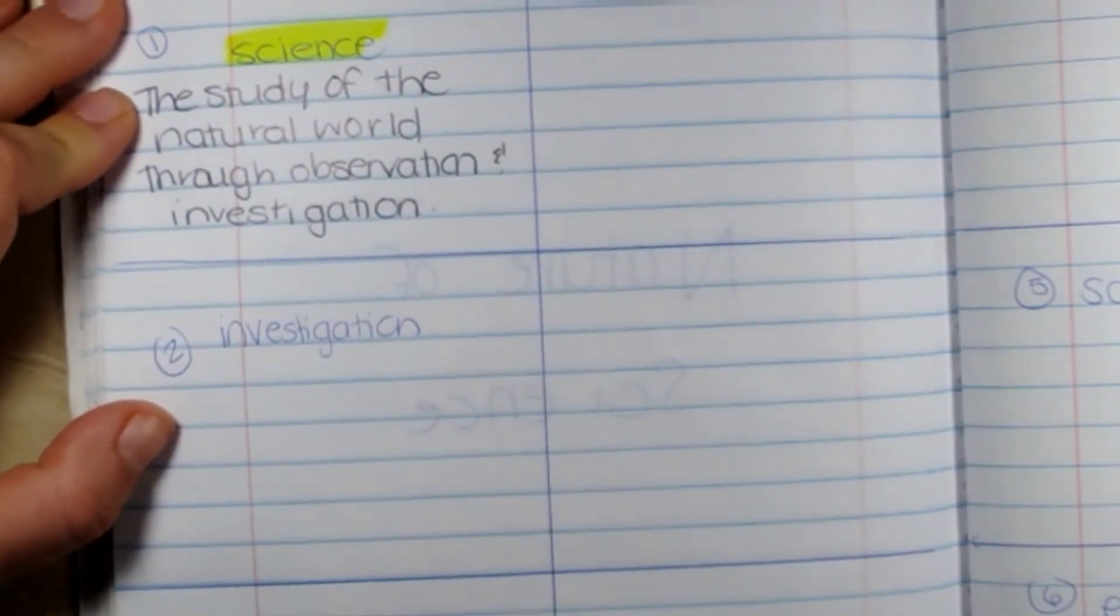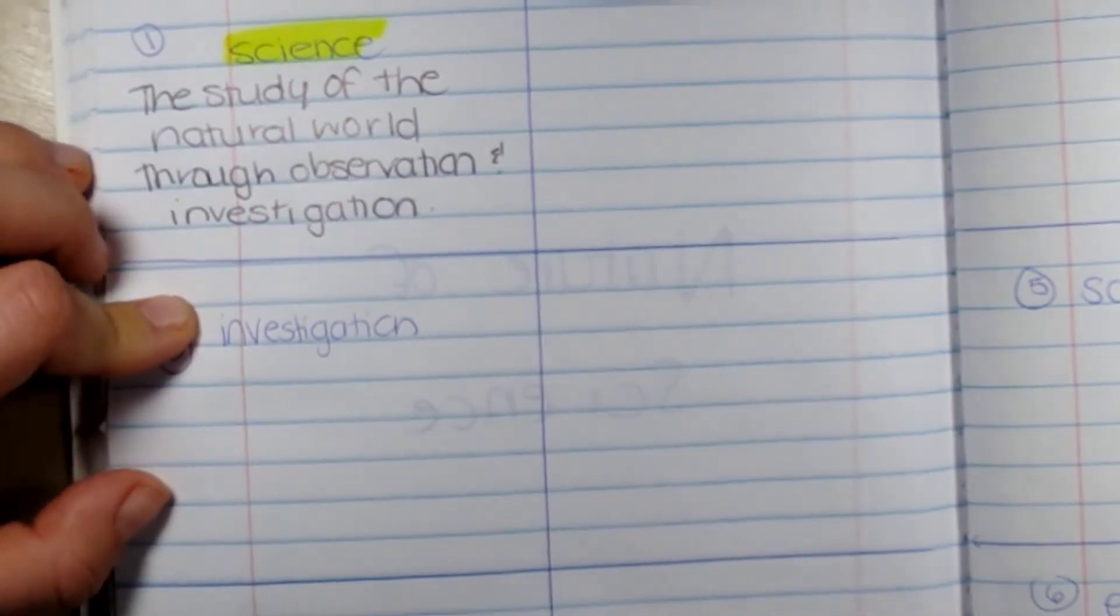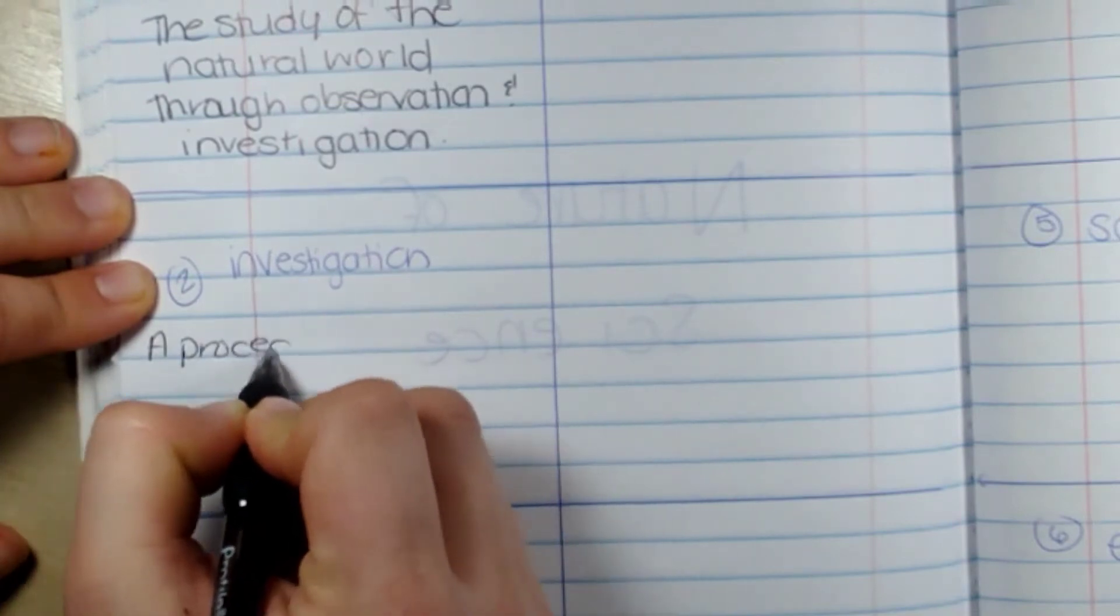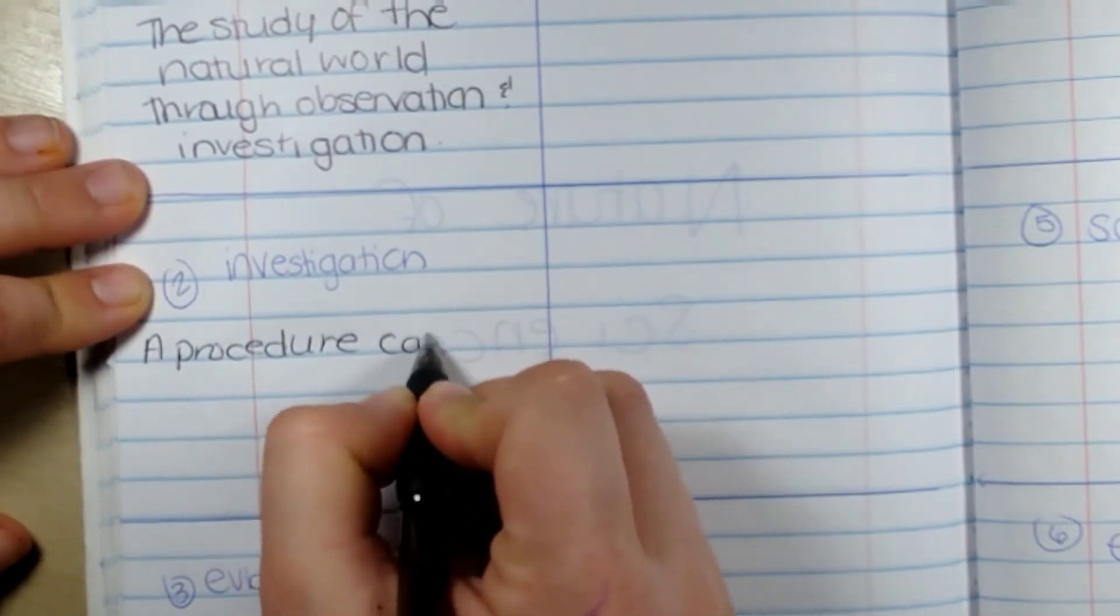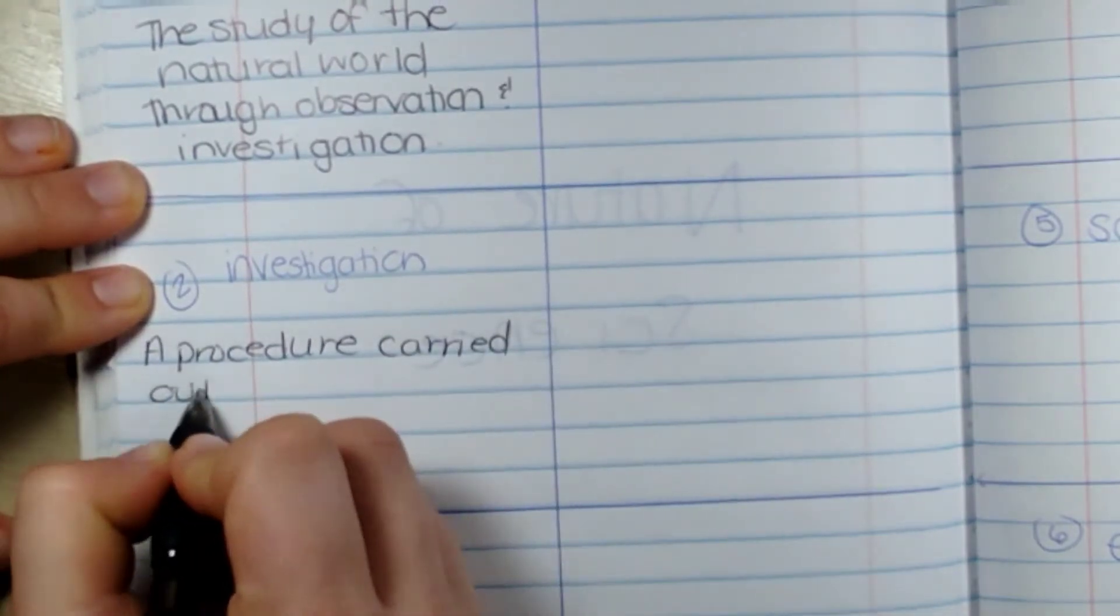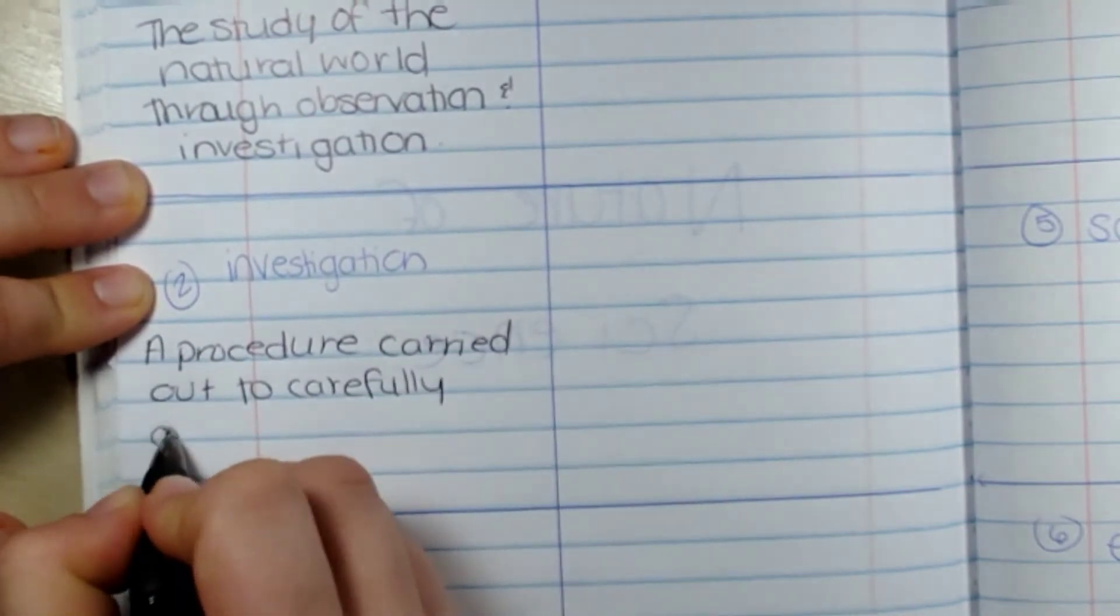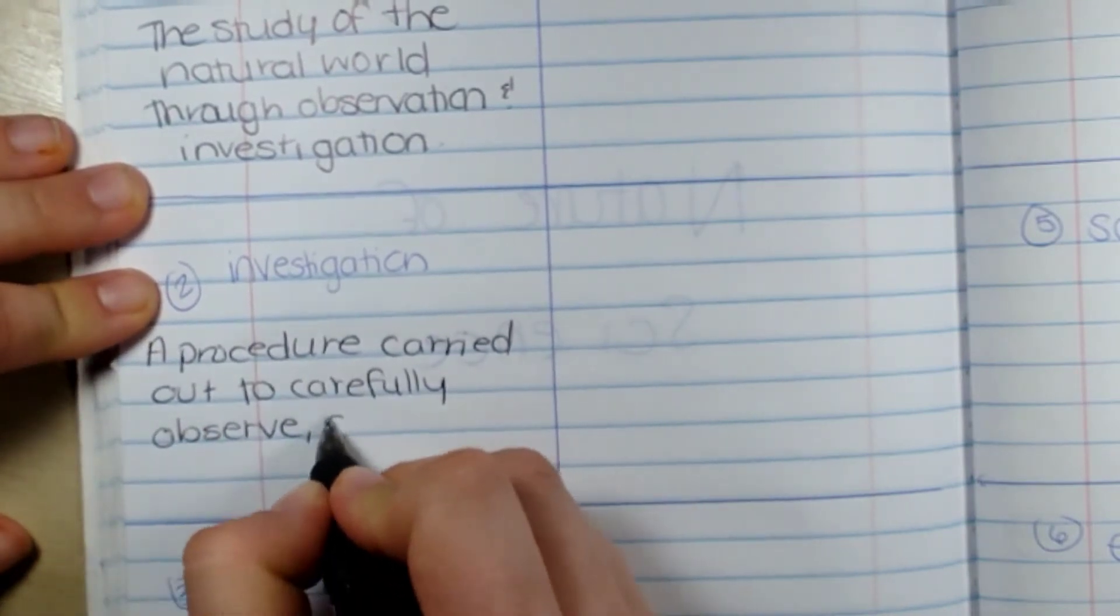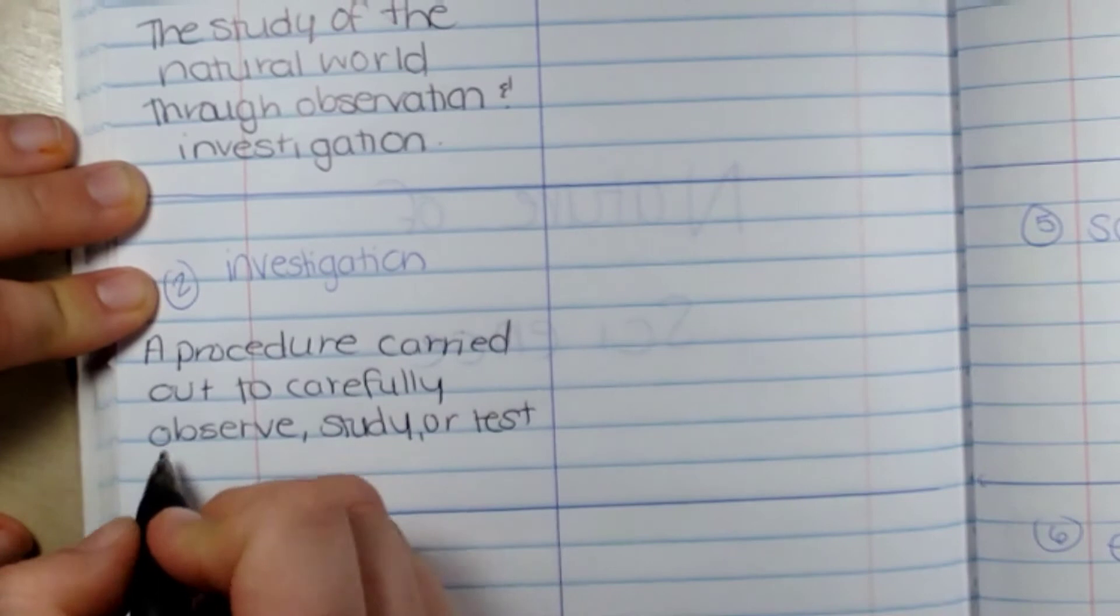Okay, our next question would be investigation. Okay, well science is through observation and investigation. What is investigation? Investigation is a procedure carried out to carefully observe, study or test something in order to learn more about it.